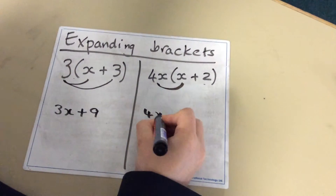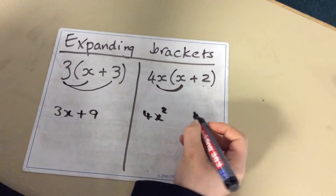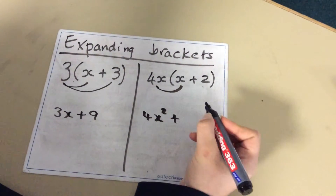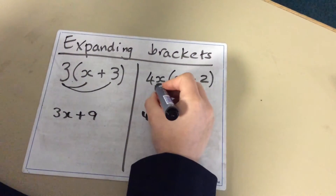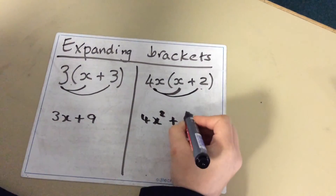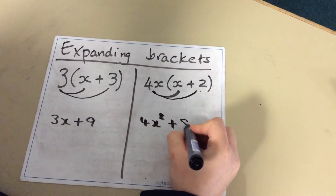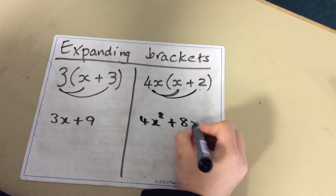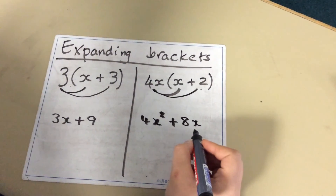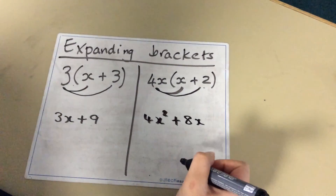Then you copy down the plus and you do 4x times 2 which is 8x. So your answer is 4x squared plus 8x.